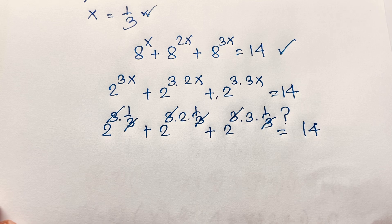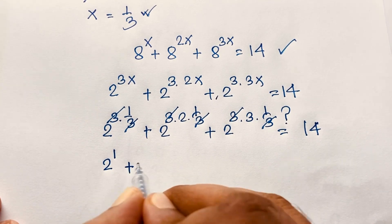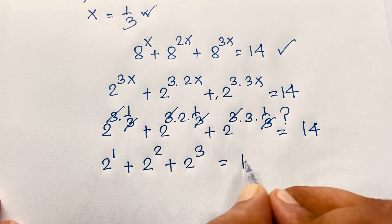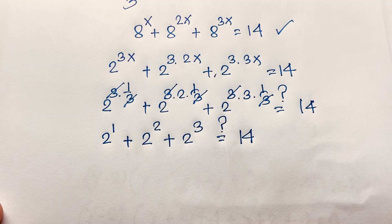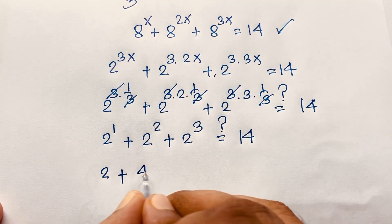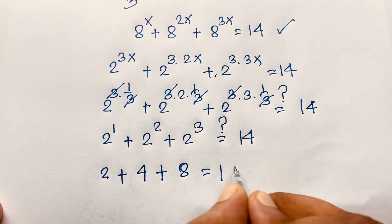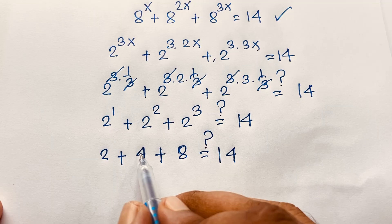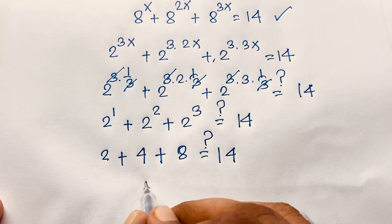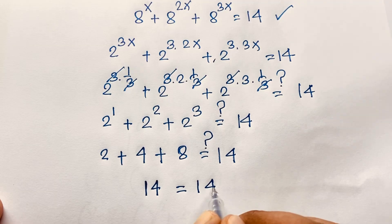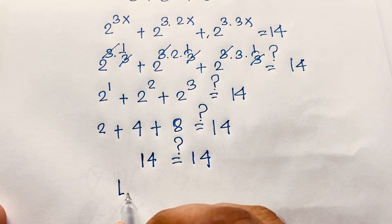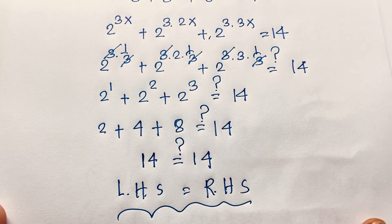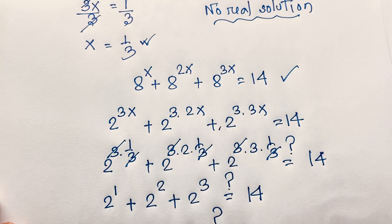The threes cancel out: 2^1 + 2^2 + 2^3 = 14. That is 2 + 4 + 8 = 14. So 14 = 14 — left-hand side equals right-hand side. Our answer is verified: x = 1/3.